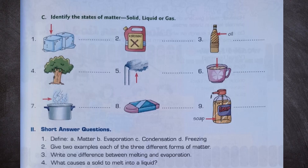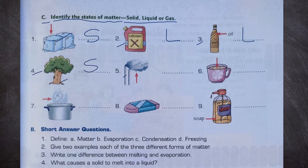C: Identify the states of matter as solid, liquid or gas. Number 1: ice — solid (S). Number 2: kerosene — liquid (L). Number 3: oil — liquid (L). Number 4: stone — solid (S). Number 5: smoke — gas (G). Number 6: tea — liquid (L). Number 7: water vapor — gas (G). Number 8: eraser — solid (S). Number 9: liquid soap — liquid (L).